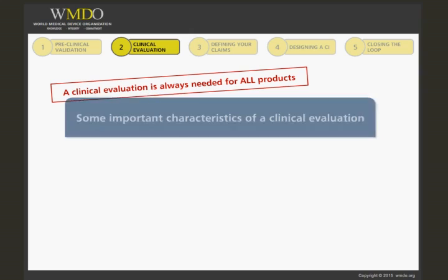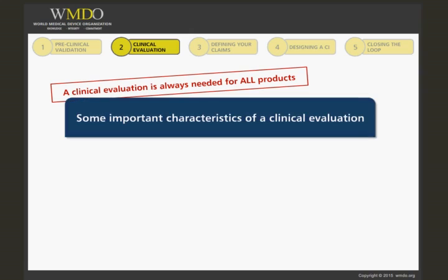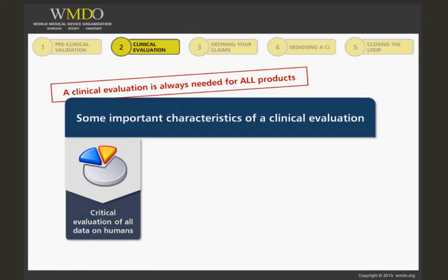Some important characteristics of a clinical evaluation are: First, a critical evaluation of all data on humans available at the time of performing the evaluation.